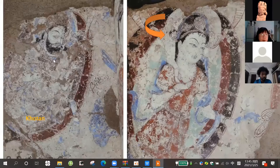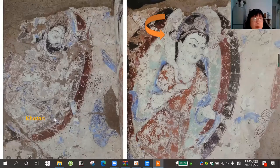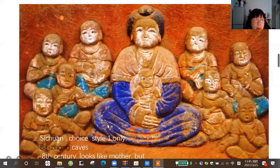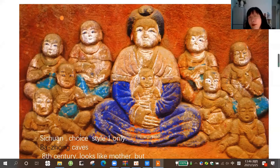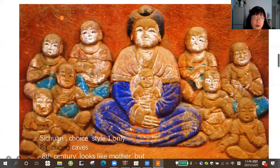So from Xinjiang we go a long distance to Sichuan. We can find that in the 8th century the Sichuan people chose only one style — the single style. Only mother, no husband. This sculpture was found in Bazhong caves, belonging to the 8th century. The Hariti looks like a common mother, not like a goddess. She is a little fat and very kind. Her clothes are very plain and common, not gorgeous.